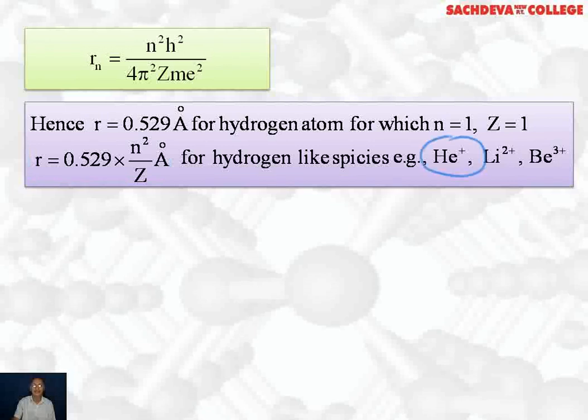Like helium ion He⁺, Li²⁺ ions which have 1 electron. Helium plus ion also has 1 electron and beryllium³⁺ also has 1 electron. So this formula is applicable to only uni-electron species.